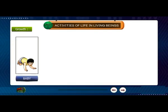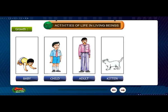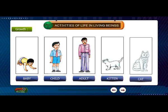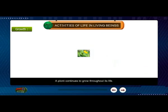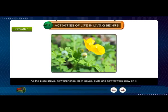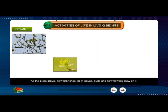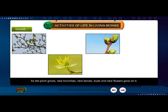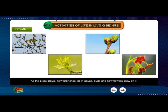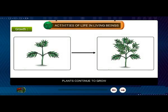Stages of human growth: baby, child, adult. Stages of animal growth: kitten, cat. A plant continues to grow throughout its life. As the plant grows, new branches, new leaves, and new flowers grow on it. Plants continue to grow.